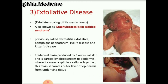Staph aureus also causes exfoliative disease — scaling of tissues in layers — also known as SSSS: Staphylococcal Scalded Skin Syndrome. It is also called dermatitis exfoliativa, pemphigus neonatorum, and Ritter's disease. Epidermal toxin produced by Staphylococcus aureus acts at skin, is carried by the bloodstream to the epidermis where it causes a split in a cellular layer, separating the outer layer of the dermis from underlying tissue.